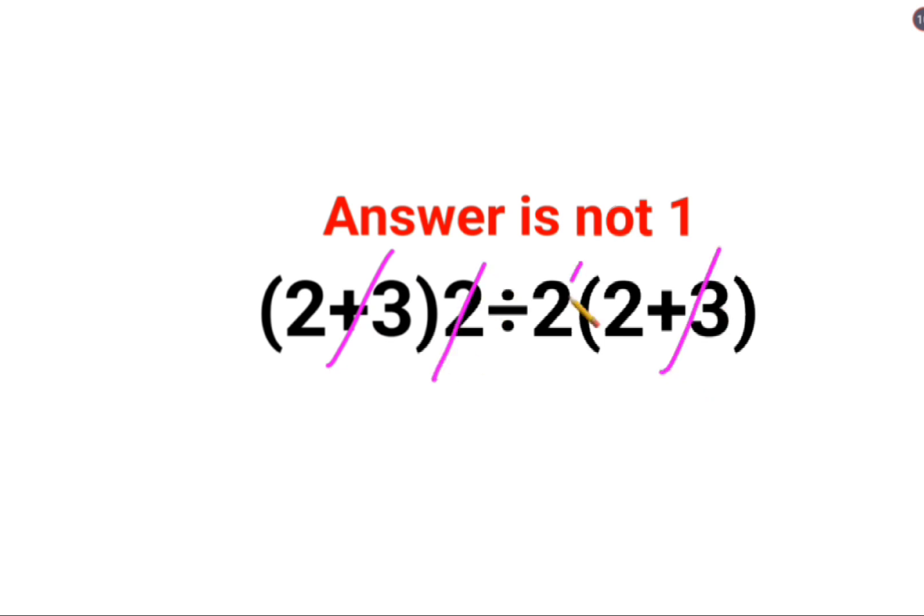Or a lot of people realize that we have the brackets, so first do the brackets. So 5 multiplied by 2 divided by 2 multiplied by 5. Since there are no signs between 2 and the bracket, that means the sign to be taken is supposed to be multiplication.